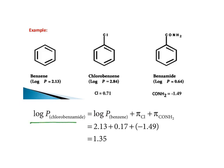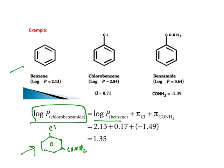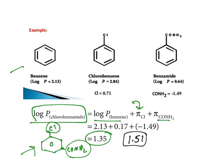One more advantage: imagine you need to find the log P of meta-chlorobenzamide (which has both chlorine and an amide group). You take benzene's log P value, add the chlorine substituent hydrophobicity (pi) value, and add the amide substituent hydrophobicity value — together you get 1.35. The practical value is 1.51, which is close. Without synthesizing the drug or checking hydrophobicity in octanol-water, you can get a rough estimate and come up with new lead molecules.